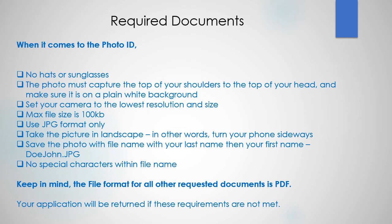When it comes to the photo ID, make sure you're not wearing a hat or sunglasses. The photo must capture the top of your shoulders to the top of your head, and make sure it's on a plain white background. Set your camera to the lowest resolution in size. The max file size is 100 kilobytes. Use the JPEG format only. Take the picture in landscape — in other words, turn your phone sideways. Save the photo with the file name using your last name and then your first name. An example would be dojohn.jpg.